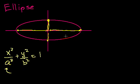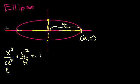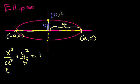So a is the x radius — this distance in our graph is a. Since we're centered at the origin, the point on the right is (a, 0), and this point on the left is (−a, 0). The radius in the y direction is b, so the top point is (0, b) and the bottom point is (0, −b).